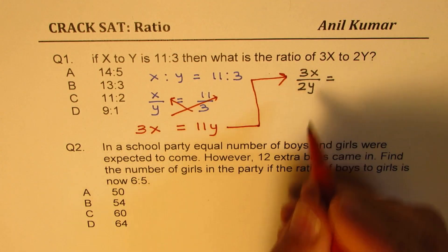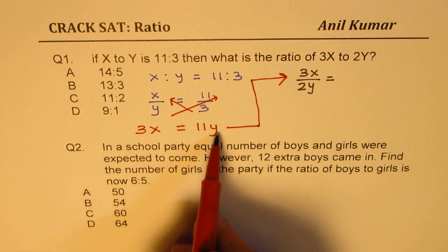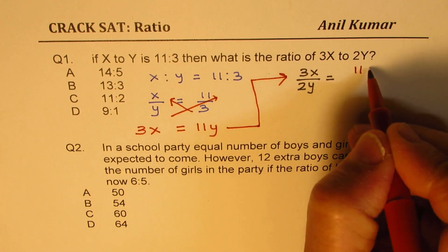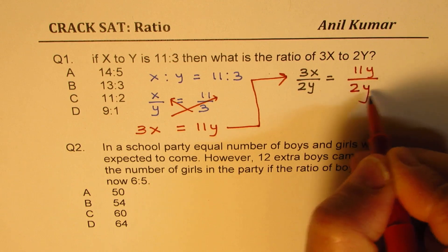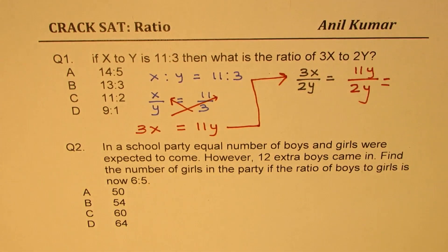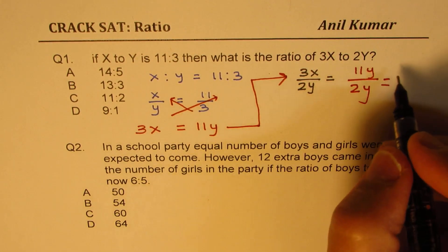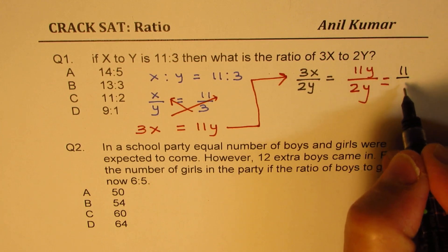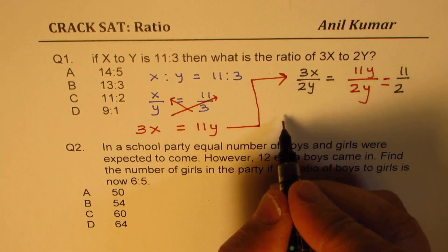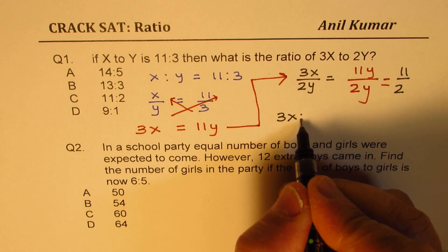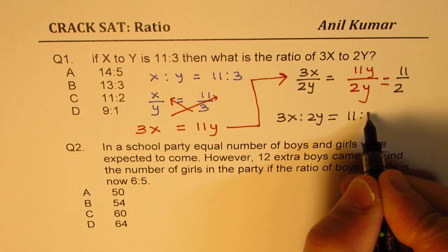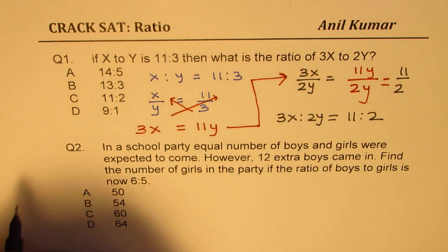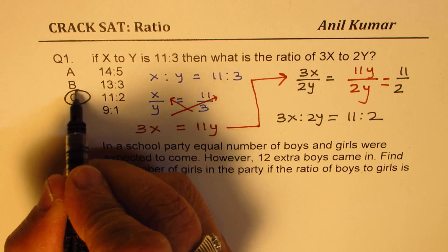So if I make this substitution here, 3X is 11Y, I get 11Y over 2Y. Now from here, Y is cancelled and what do we get? We get 11 to 2. Therefore, the ratio of 3X to 2Y could be written as 11 is to 2. So we get option C as our right option.